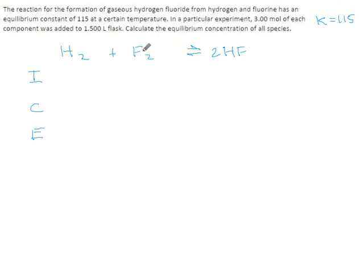In a particular experiment, three moles of each component were put in one and a half liter flask, so the concentrations would all be three divided by 1.5, which is two. So we start with two of everything. They did say, I thought they might have said each reactant, but they said each component, so all the things start with concentrations of two moles per liter, and now they want the equilibrium values.